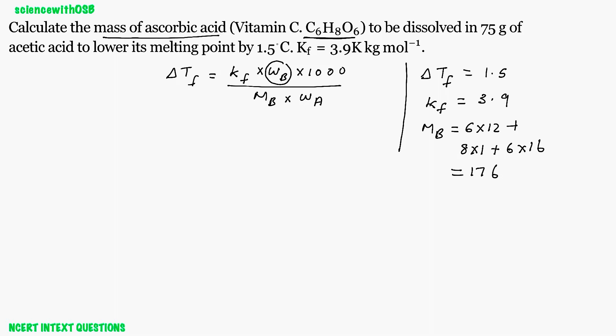We got mb. Now wa is 75, right? All values are given, so what is the equation for wb? ΔTf × mb × wa / (Kf × 1000). Direct substitution.